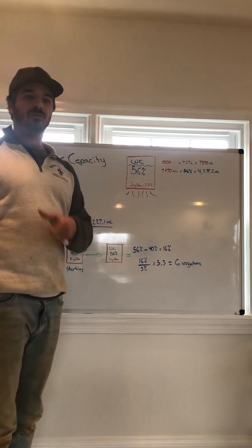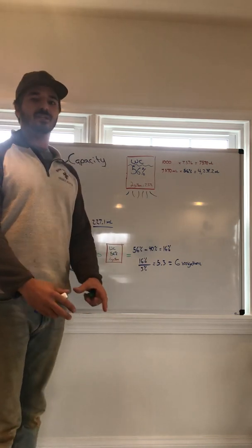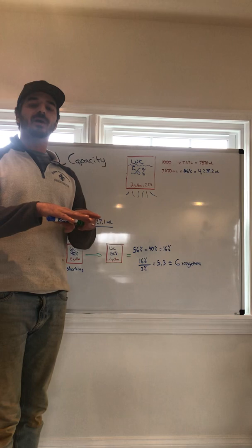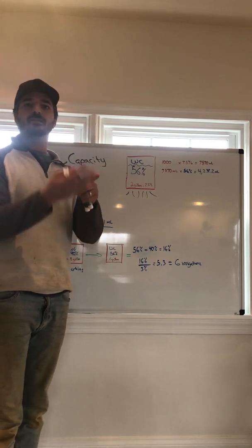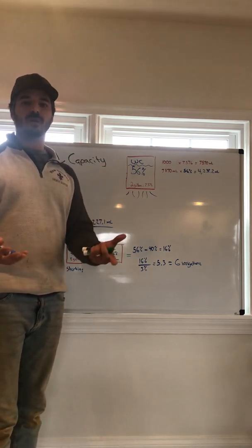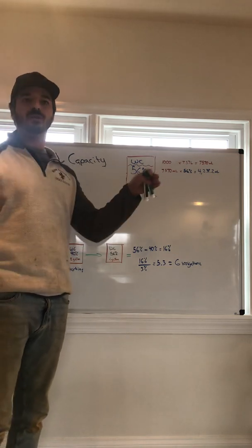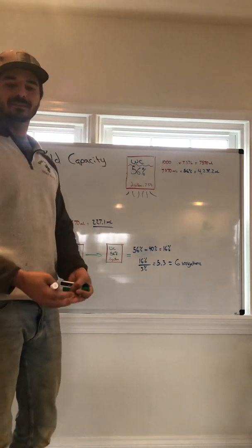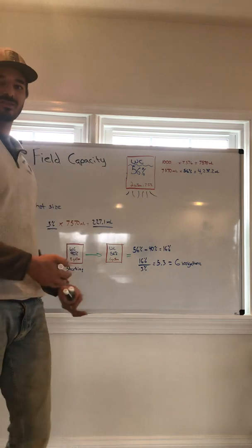And key to note, if you do this in a bucket, and the substrate's sitting in the bucket, you have to hold it above that bucket for a period of time to watch those drips come out until it stops dripping. Once again, that represents field capacity, means it can't hold any more water, and what has ran out is its leachate.